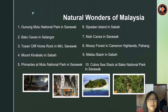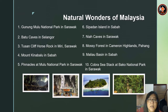Dear students, on this slide you can see natural wonders of Malaysia. There are a few here. For example: Gunung Mulu National Park in Sarawak, Batu Caves in Selangor, Tusan Cliff Horse Rock in Miri Sarawak, Mount Kinabalu in Sabah, Pinnacles at Mulu National Park in Sarawak, Sipadan Island in Sabah, Niah Caves in Sarawak, Mossy Forest in Cameron Highlands Pahang, Maliau Basin in Sabah, and Cobra Sea Stack at Bako National Park in Sarawak.